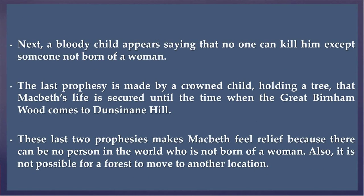A bloody child appears saying that no one can kill him except someone not born of a woman. The last prophecy is made by a crowned child holding a tree, that Macbeth's life is secured until the time when the great Burnham Wood comes to Dunsinane Hill. These last two prophecies make Macbeth feel relieved, because there can be no person in the world who is not born of a woman, and it is not possible for a forest to move to another location. So he feels much more relieved than earlier.